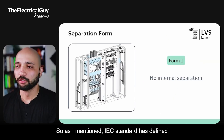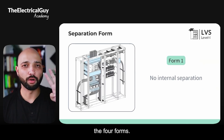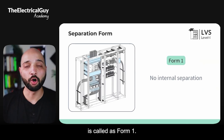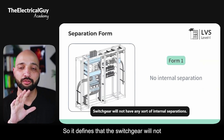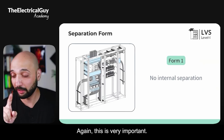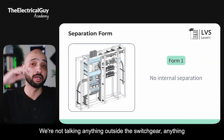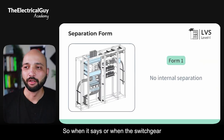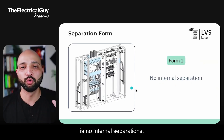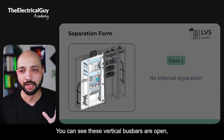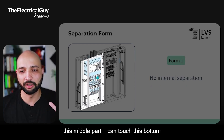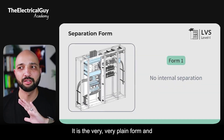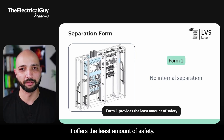Let us understand the four forms. Form 1 defines that the switchgear will have no internal separations — we are talking about separations within the switchgear, not outside the metal enclosure. The vertical busbars are open, the MCCBs are open, and there is no separation between any parts. It is the most basic form and offers the least amount of safety.